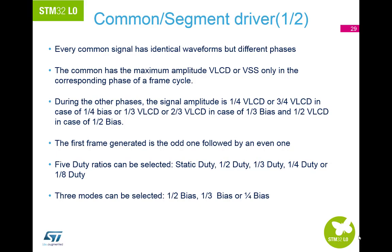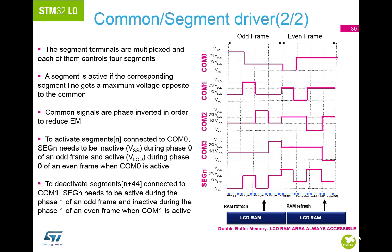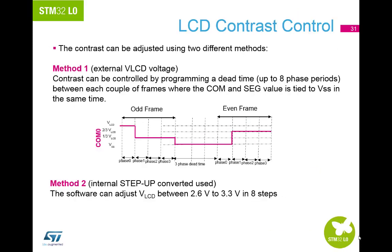Common signals are generated by the common driver block. Every common signal has identical waveforms but different phases with the settings shown. The segment driver block controls the segment lines according to the pixel data coming from the 8-to-1 mux driven in each phase by the common driver block. The LCD power supply source may come from either the internal step-up converter or from an external voltage applied on the VLCD pin. If an external source is selected, the internal step-up converter is disabled to reduce power consumption.